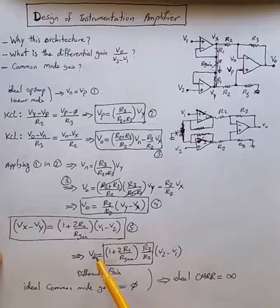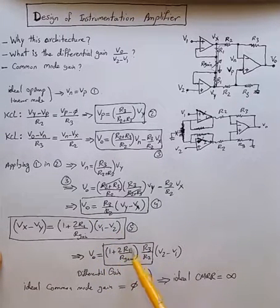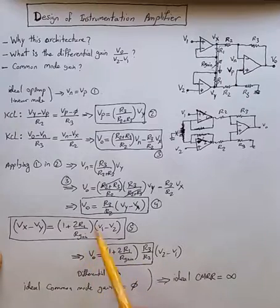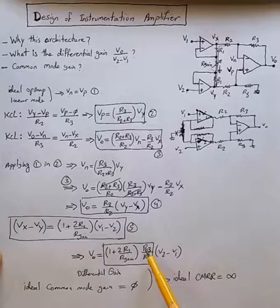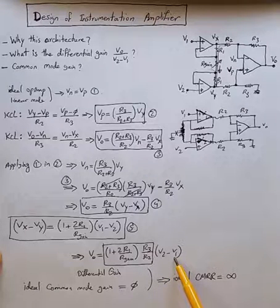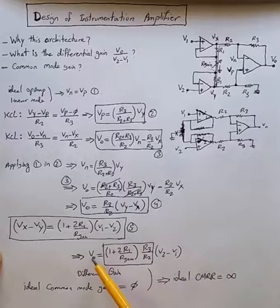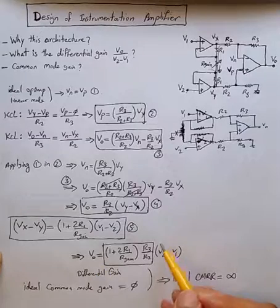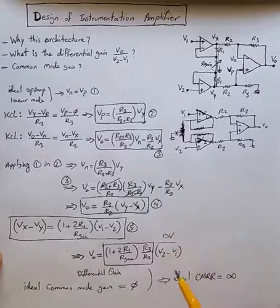We can easily see that Vout is 1 plus 2R1 divided by Rgain times R3 over R2 times V2 minus V1. That's the relationship between output and delta V, or differential input voltage.